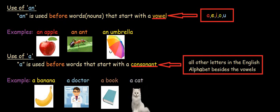How do we use an and a? Now an is used before words that starts with a vowel. Vowels are a, e, i, o and u.